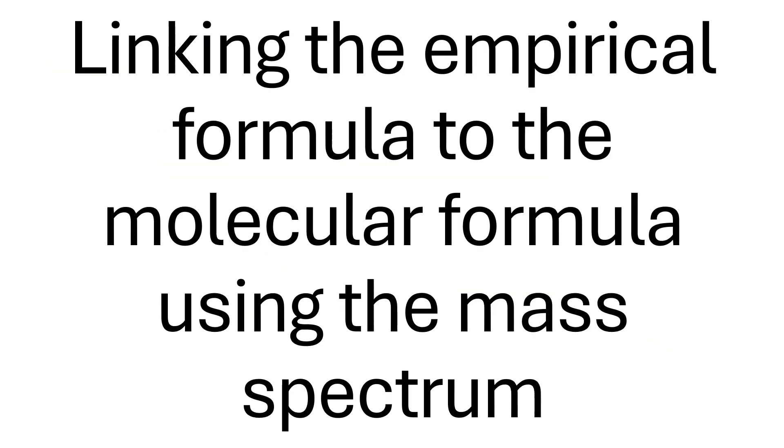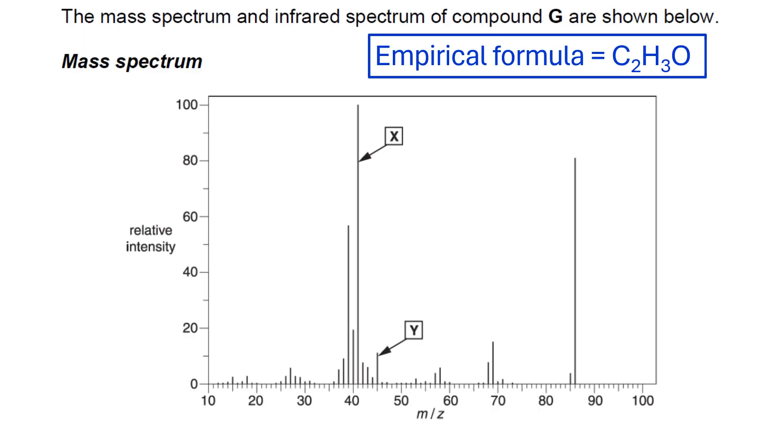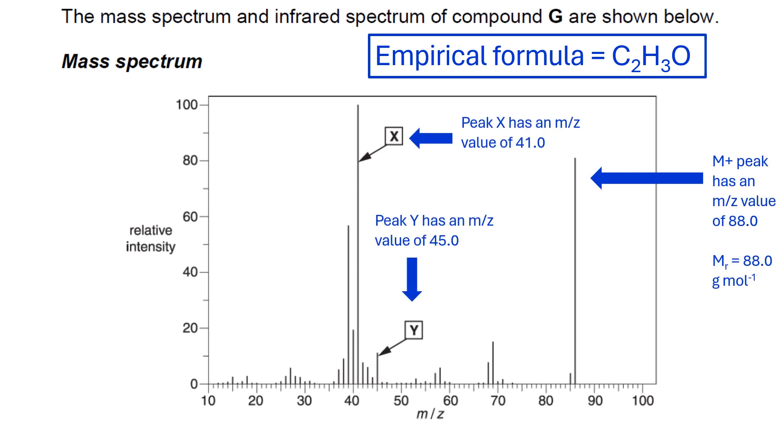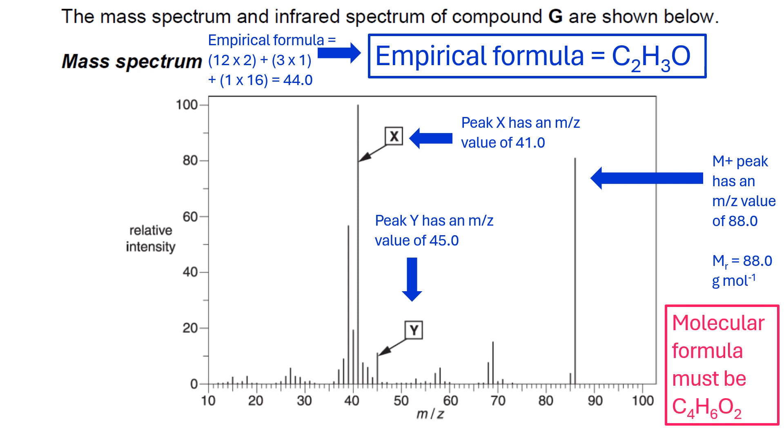Next we can link the empirical formula to the molecular formula using the mass spectrum. Taking our conclusion from the previous slide, we can then just apply an m/z value for each peak. What's interesting is the M plus peak has an m/z value of 88. If we add up the value of the empirical formula that adds up to 44, so that one divides into the other twice. So the molecular formula must be C4H6O2.